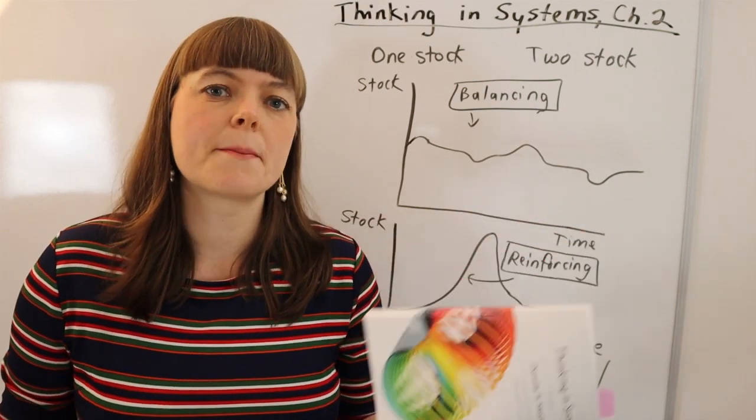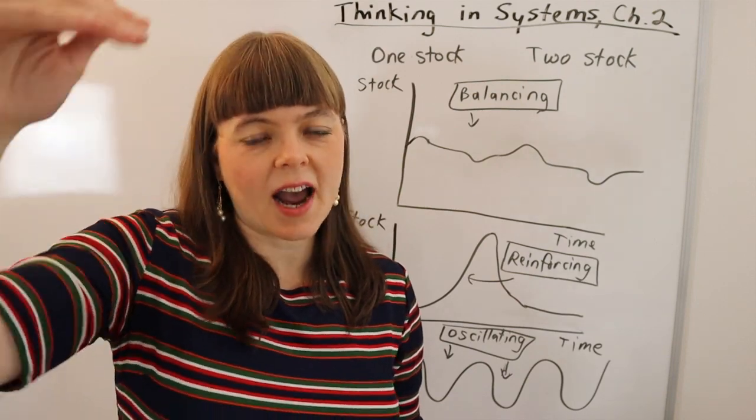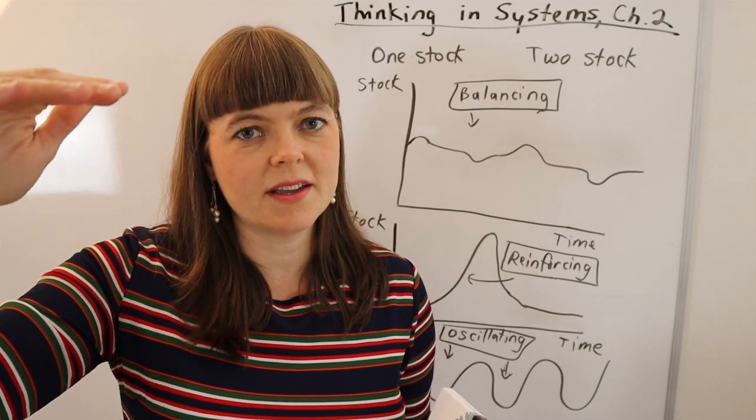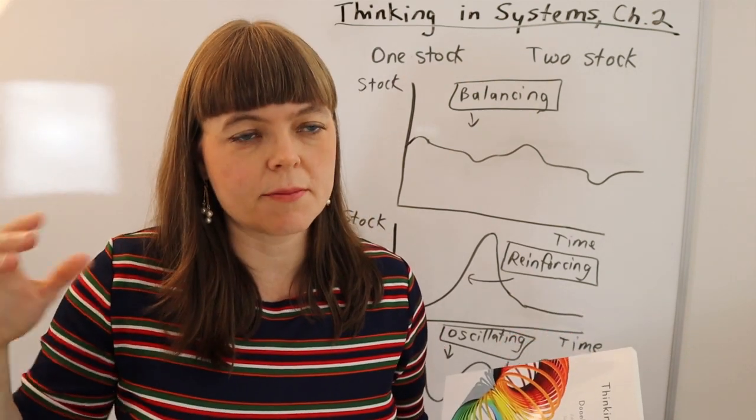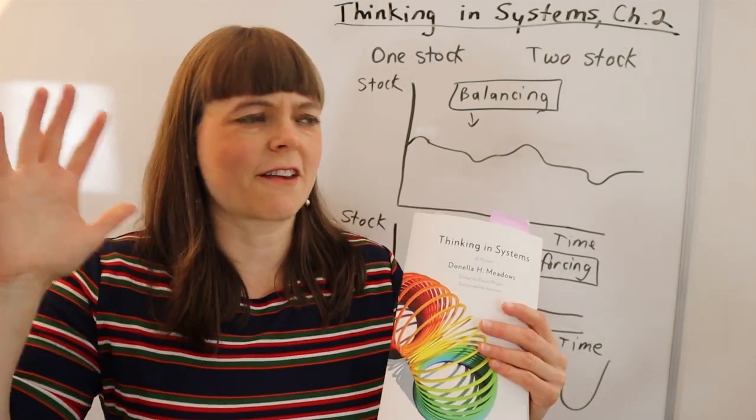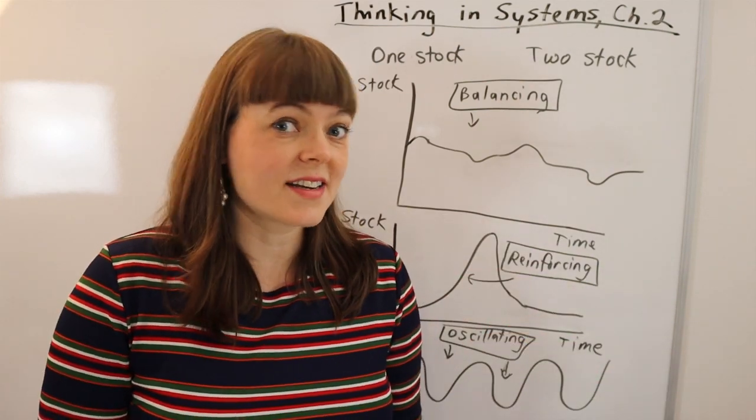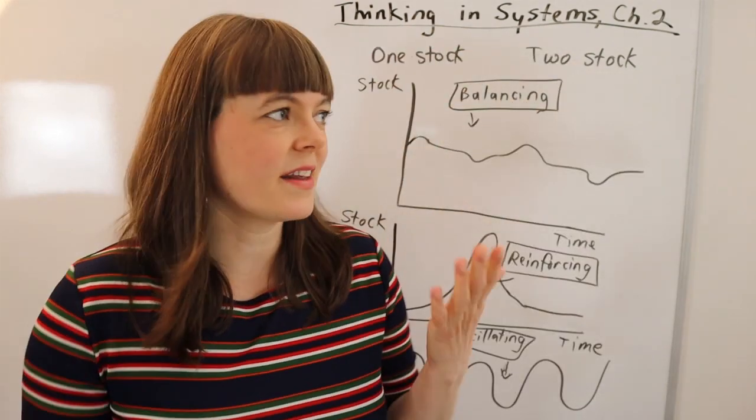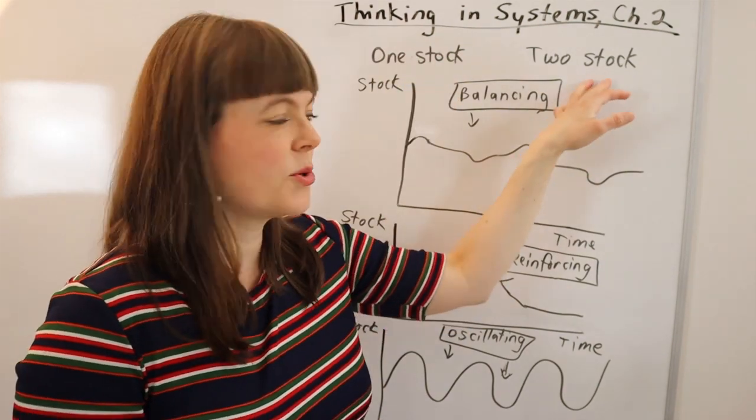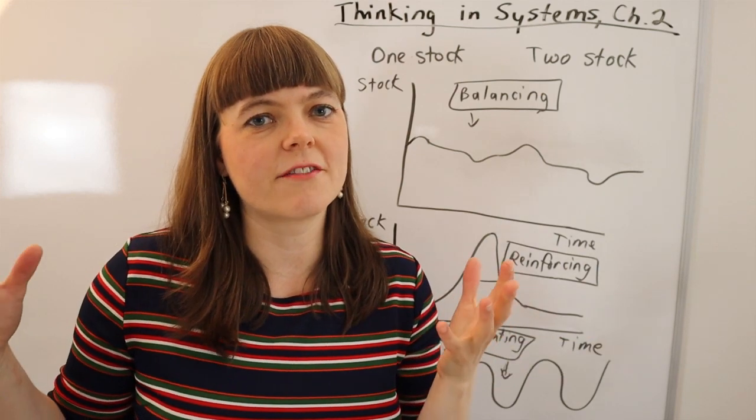So that was how she opened it and when she did that what I was expecting was a title of a section that said here is one type of system, this is the lion type of system and here's how I would describe it. So I was actually looking for five different categorizations of systems and I did not find that actually. Yet when you look at her section titles they're basically one stock systems and two stock systems which I do not think are her actual categories of systems.